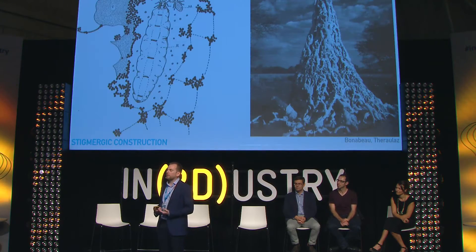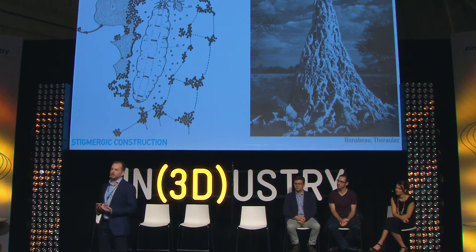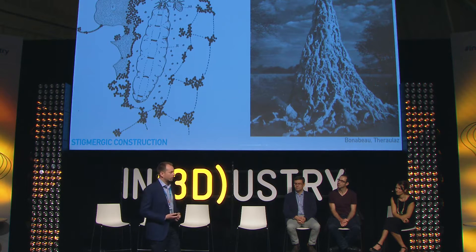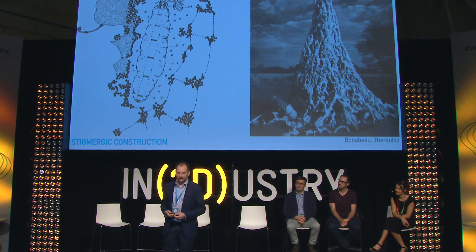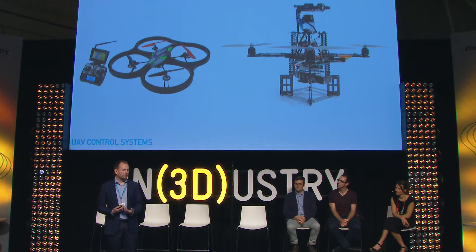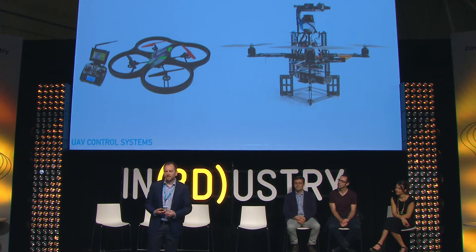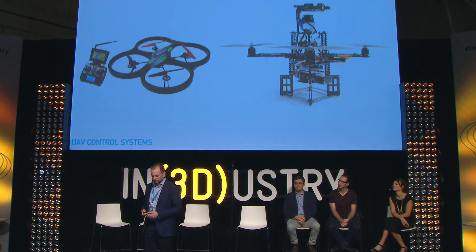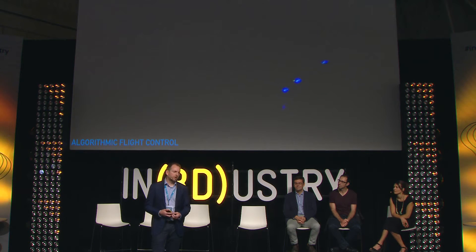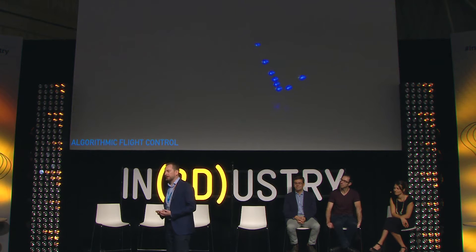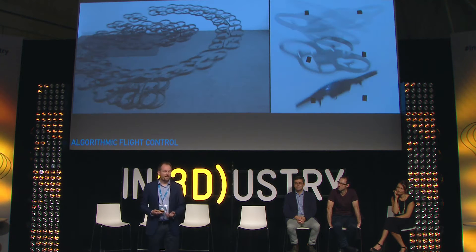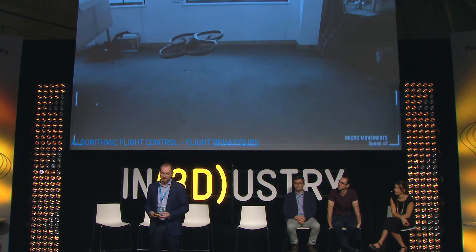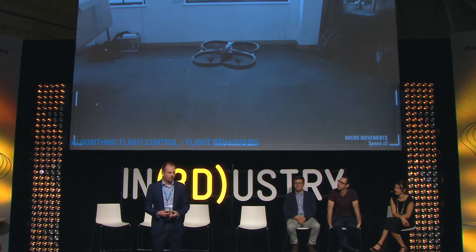This work is focused on the architectural design implications of merging design and construction as a singular process — similar to the way termites or wasps operate — where one design decision is generated in response to the previous design decision. Aerial robots or UAVs, unmanned aerial vehicles, come in a range of sizes, some more suitable for carrying heavy loads for construction. They tend to be operated by remote control, so we write computer algorithms to control their motion precisely so they can operate automatically. These motions can operate at both a flight scale and a more mobile machine movement scale, where motion becomes part of the creative process.